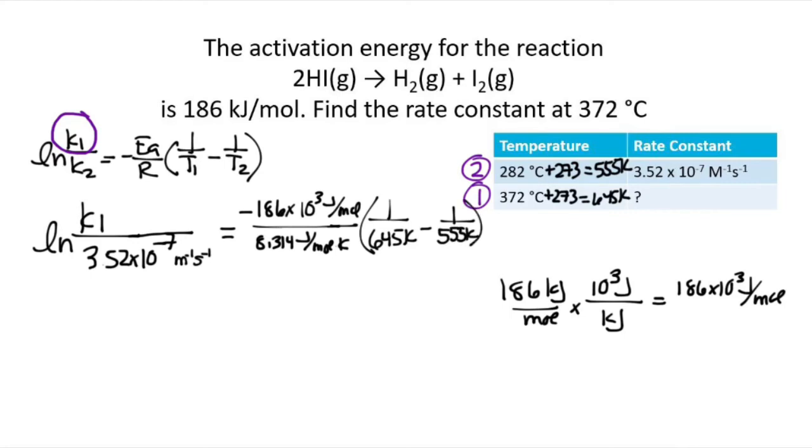So if we do all the arithmetic on the right side of this equation, we get 5.625. And on the left side, we still have natural log of K1 divided by 3.52 times 10 to the minus 7 per molar per second.